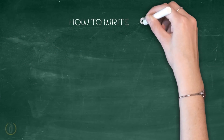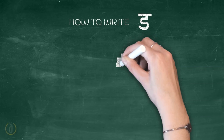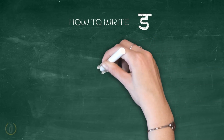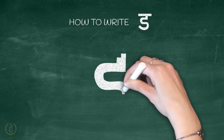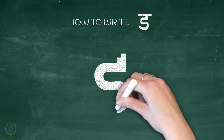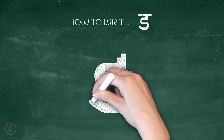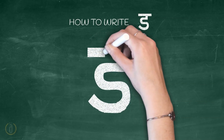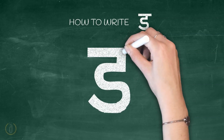How to write Da: draw a small standing line, and connected to that draw like the English letter S, and finish it with a sleeping line on the top.